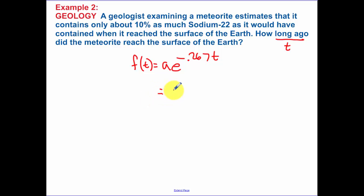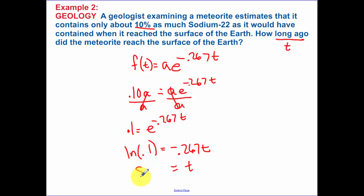So if my initial amount is a, and we are looking to find 10% of what originally existed, only about 10% as much as it originally existed. If I divide by a on both sides, the a's cancel. So I have 0.1 equals e to the negative 0.267t. Now I do my natural log. Natural log of 0.1 is equal to what my exponent is, and solving for t, 8.634 years.